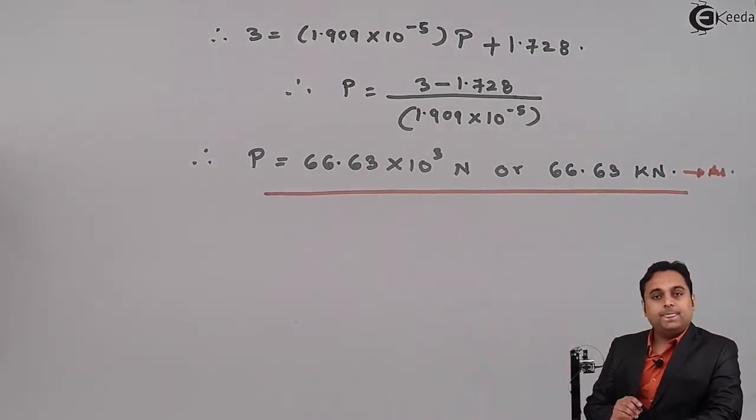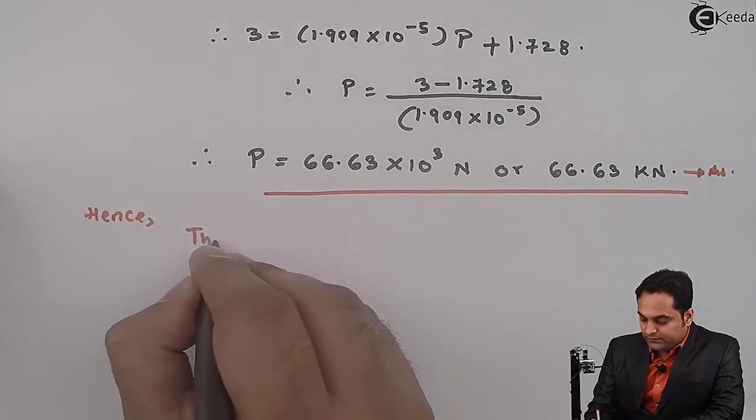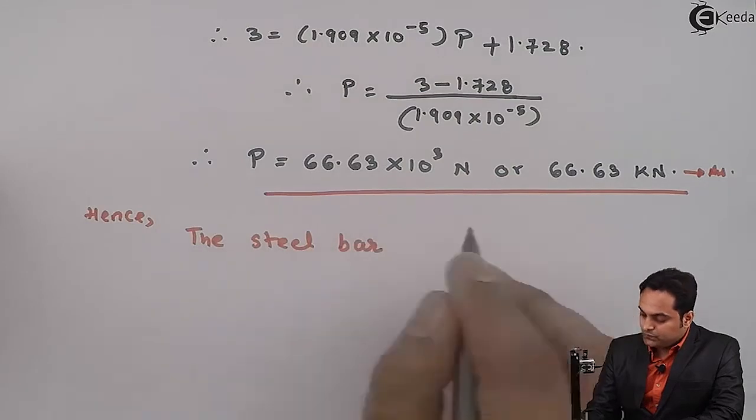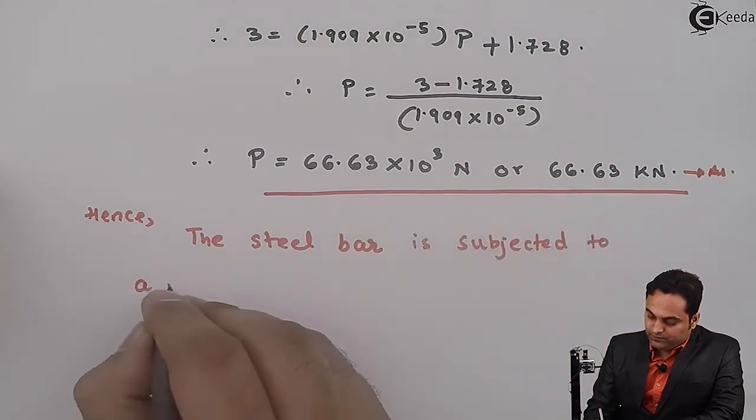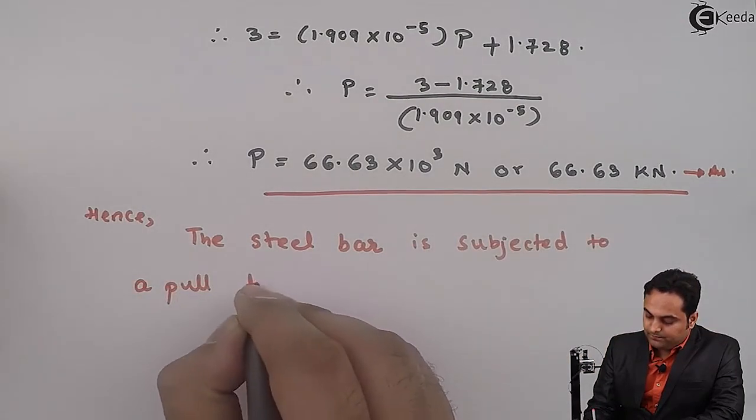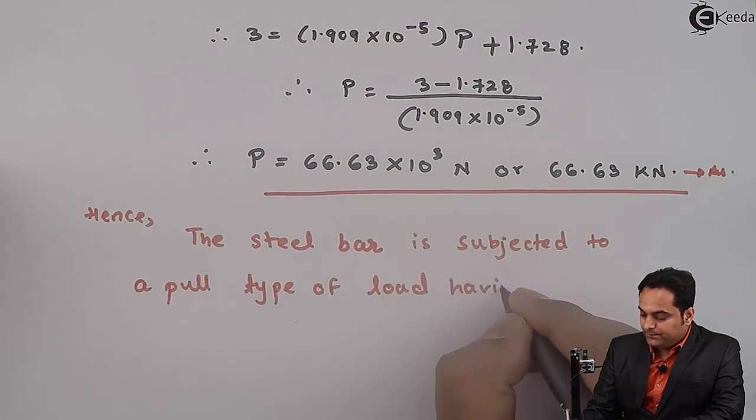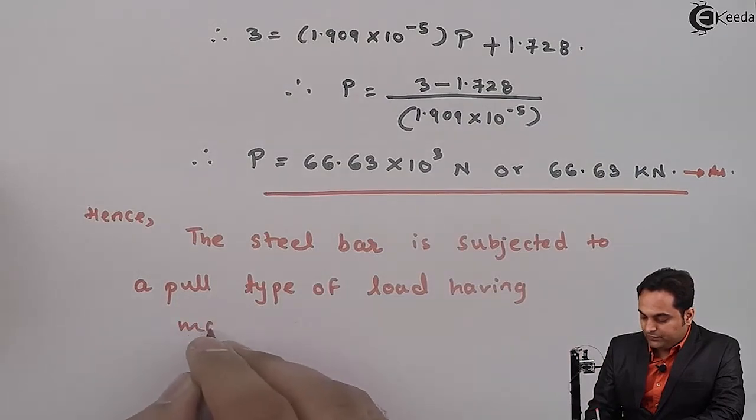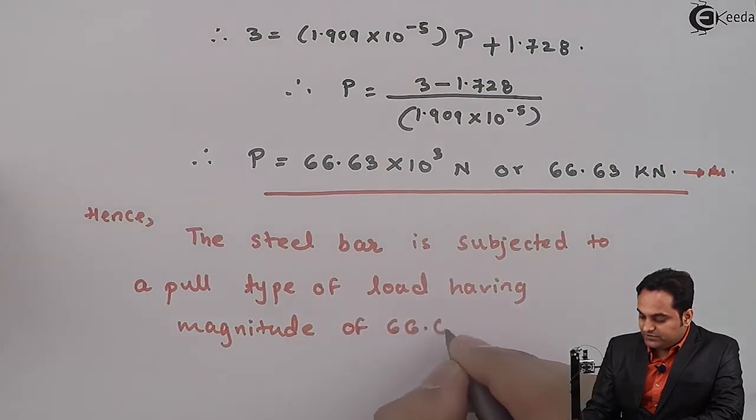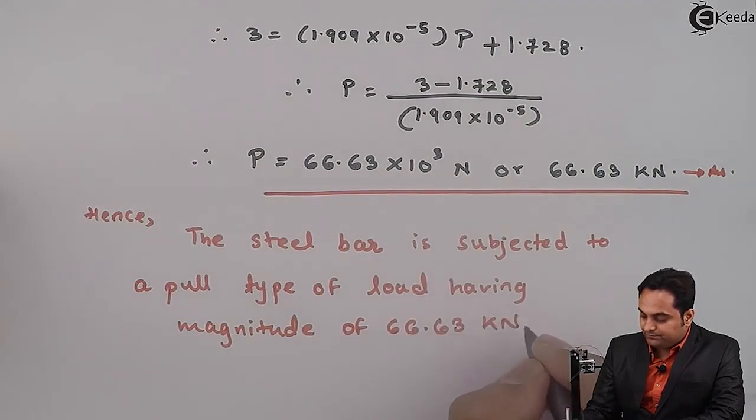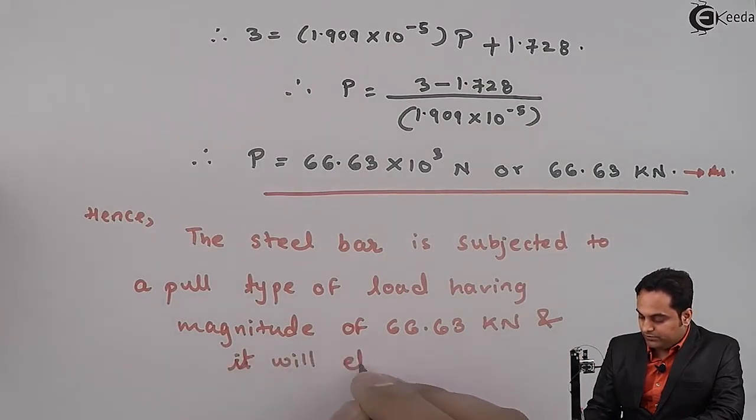And we can say that hence the steel bar is subjected to a pull type load having magnitude of 66.63 kilonewton and it will elongate the bar. So here if we look into the question, they told us to find what should be the applied load.